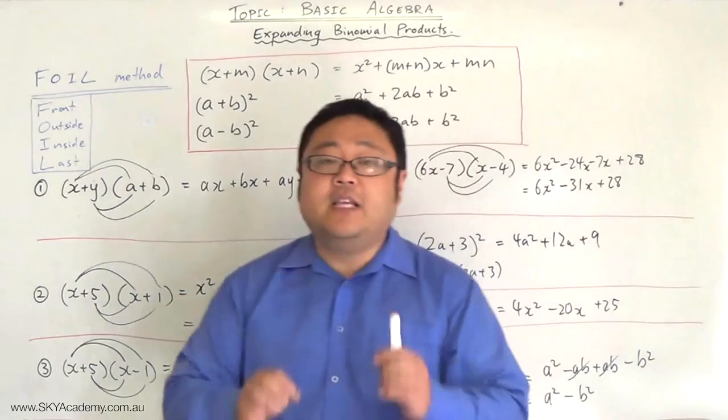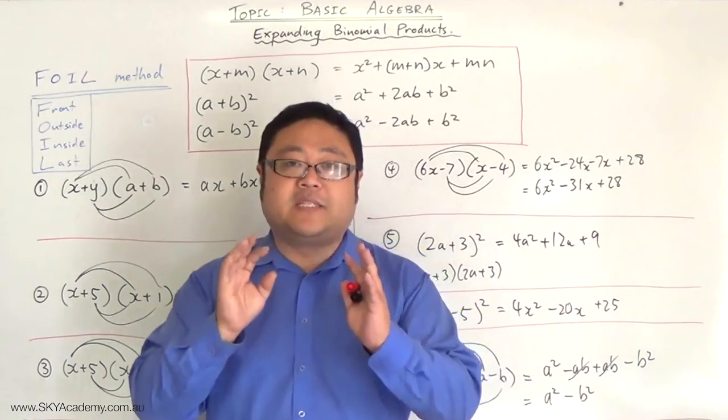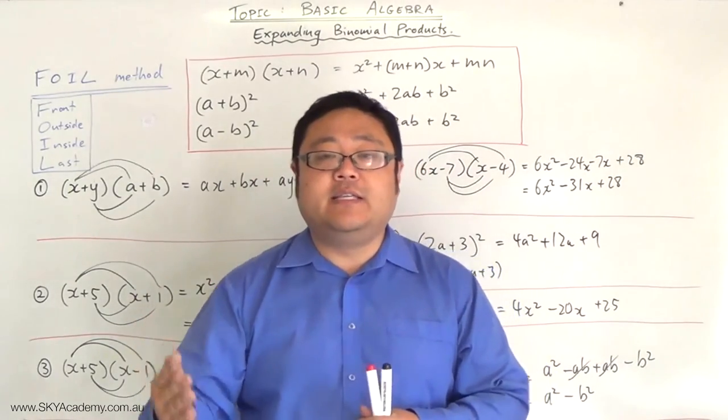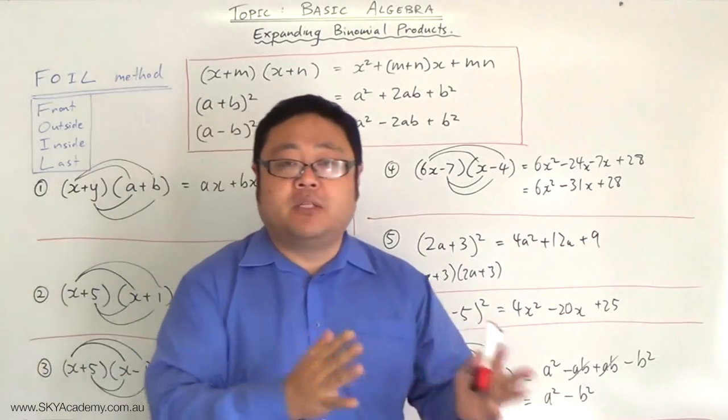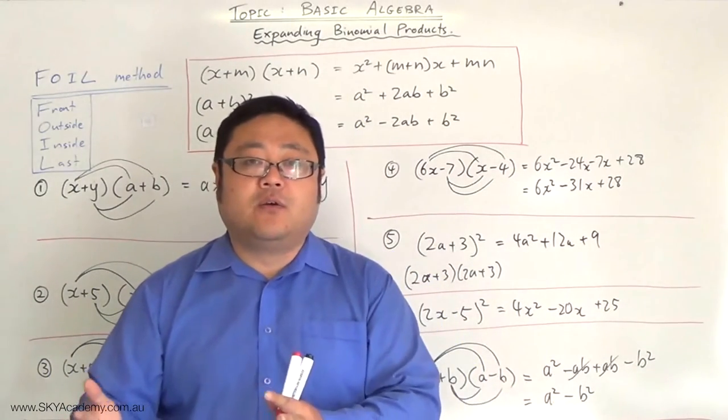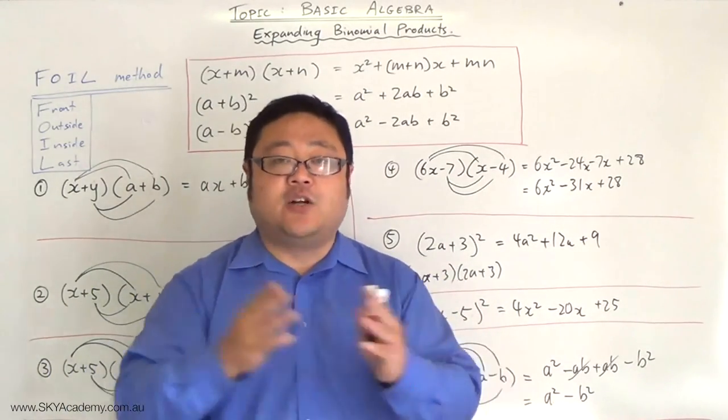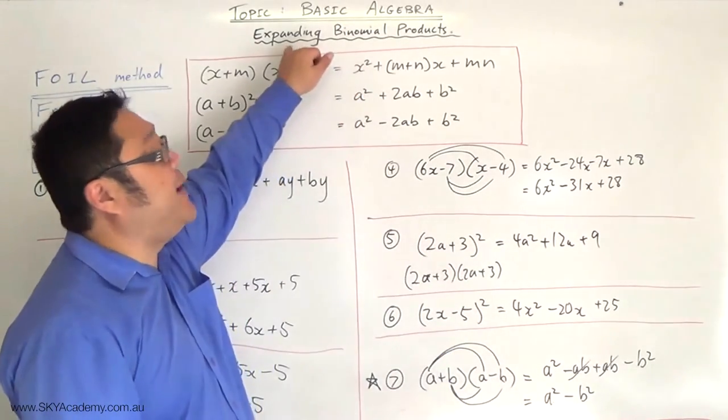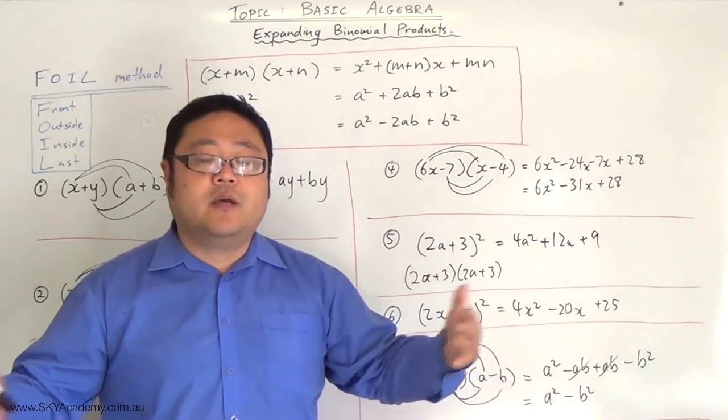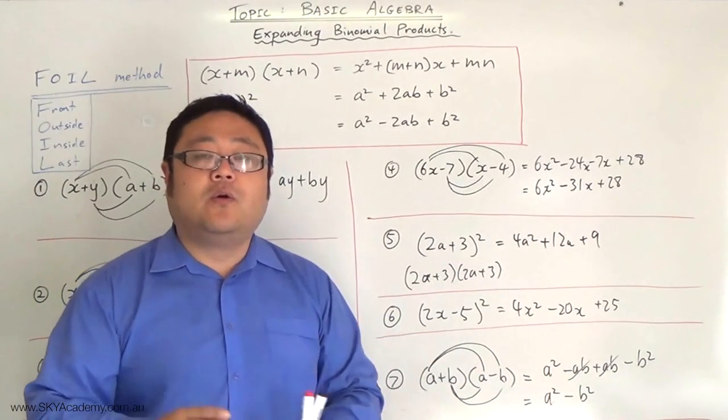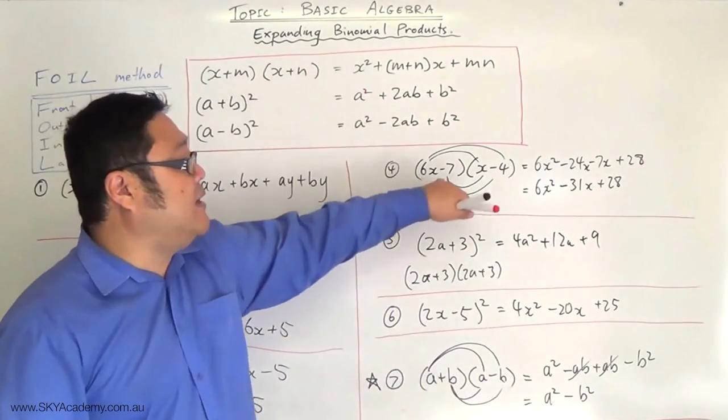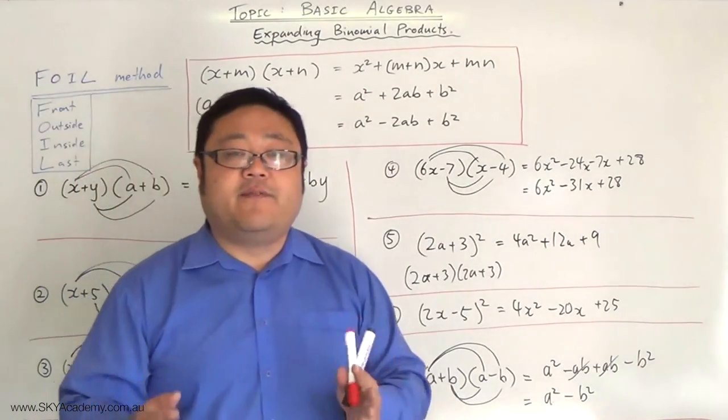So what we've done here is what we call binomial expansions. And what we'll lead into is the opposite. Just like multiplication has an opposite called division, just like addition has an opposite called subtraction, you'll find that expanding binomials also has an opposite called factorizing.